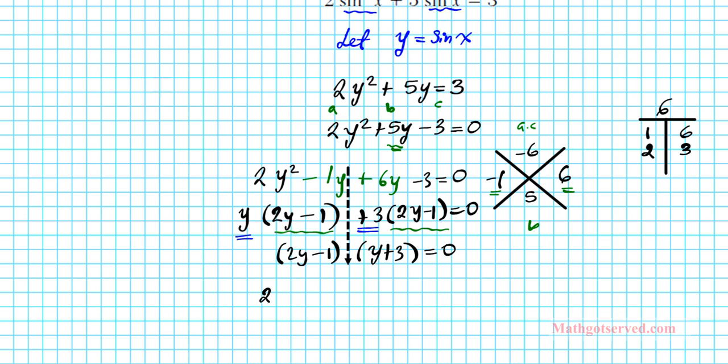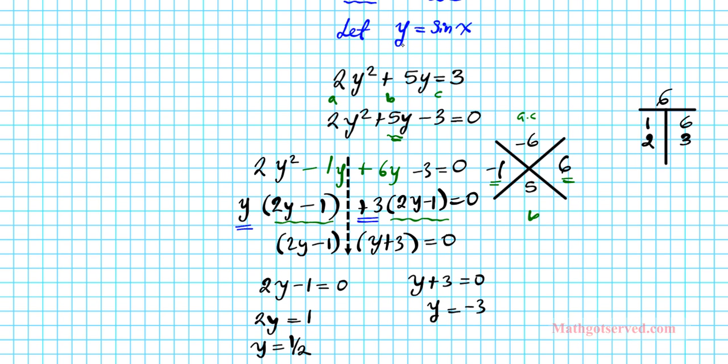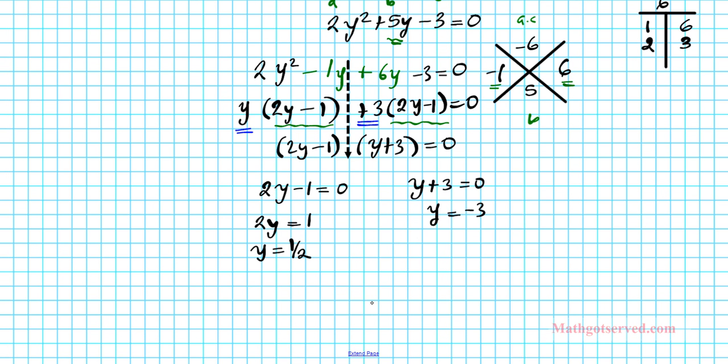Let's use the zero product property. We have 2y minus 1 equals 0 or y plus 3 equals 0. For this one, we have 2y equals 1, y is equal to 1 half. And for this one, y is equal to negative 3. So are these our answers? The answer is absolutely not. Remember, we made a substitution. We said let y equals sine x. The problem asks us to solve for x, not y. We need to change our variables back. For the first case, sine x equals 1 half. For the second case, sine x equals negative 3.